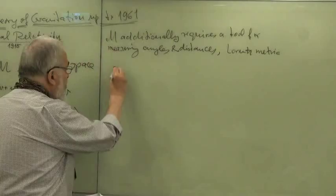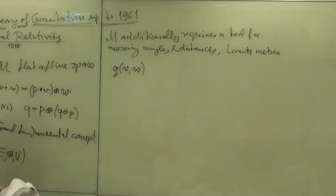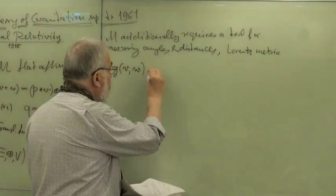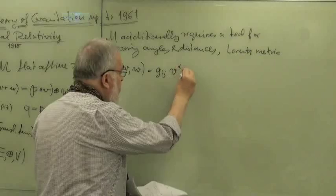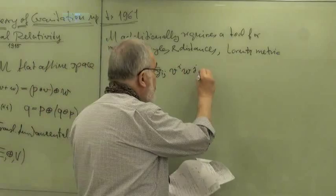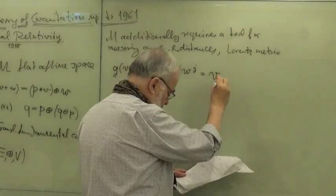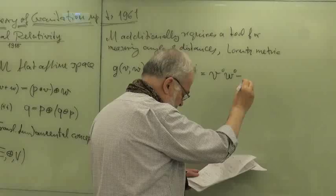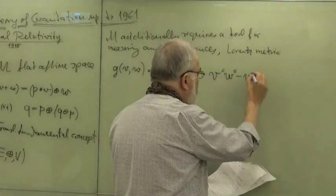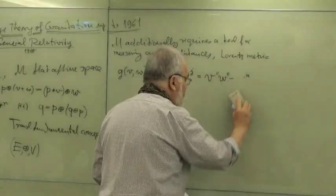If you have a metric and you feed in two vectors, g(v,w), you find g_ij times v^i times w^j, summation over i of course. If you write it in longhand, it's v^0 w^0 minus v^a w^a, where a runs over spatial indices. So that is our metric.